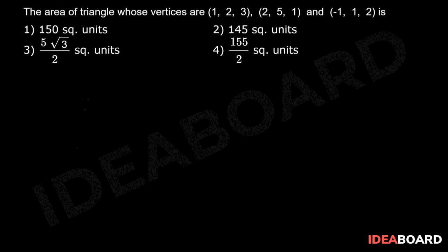Let O be the origin and A, B, C be the given points. Therefore, we have OA bar equals to I bar plus 2J bar plus 3K bar, OB bar equals to 2I bar plus 5J bar plus K bar, and OC bar equals to minus I bar plus J bar plus 2K bar.